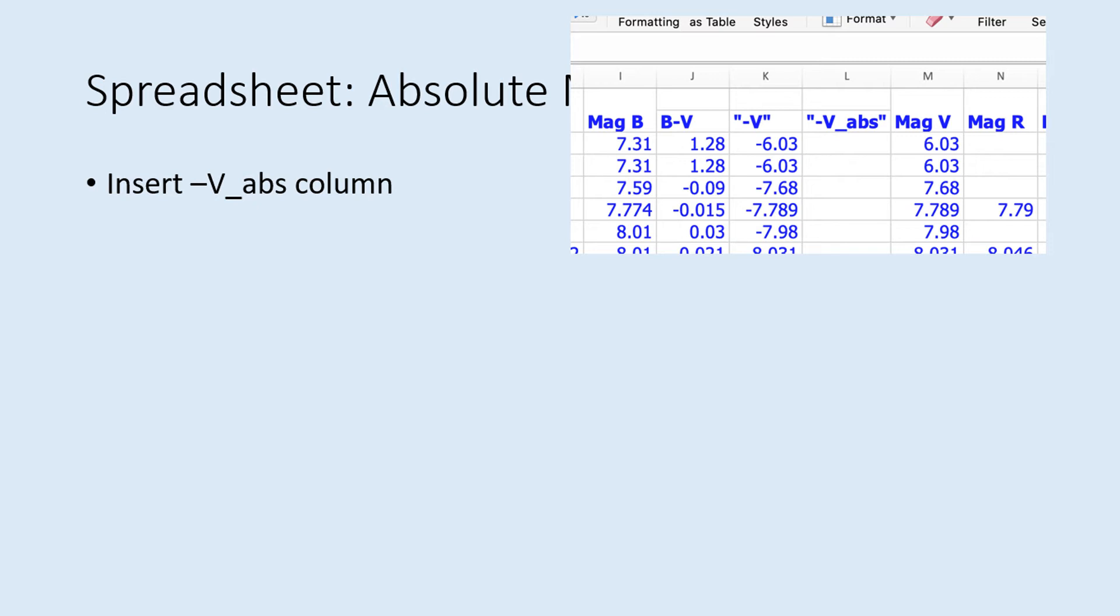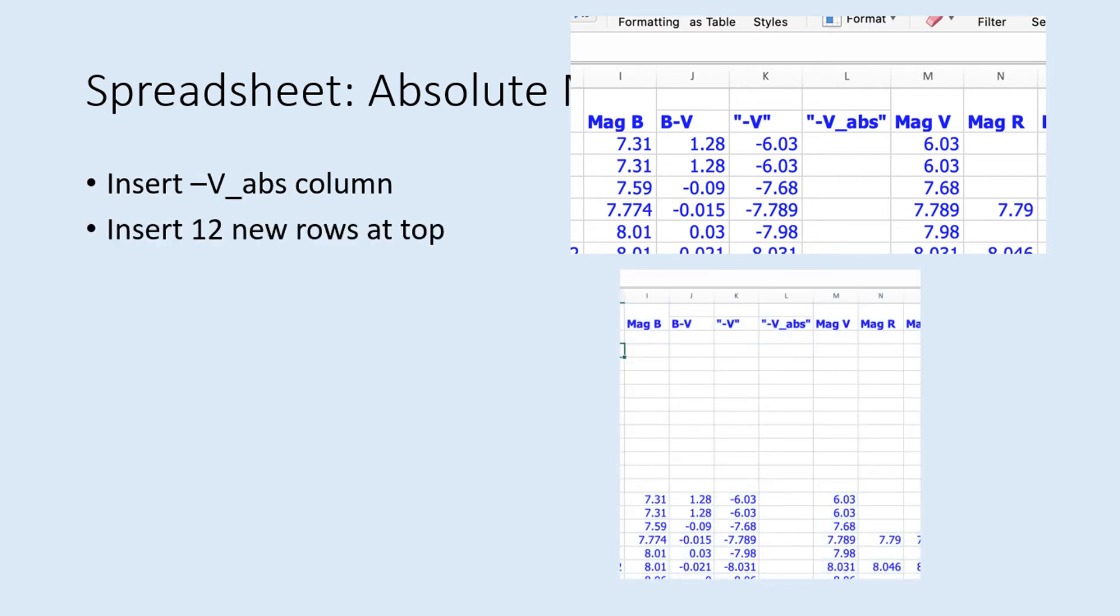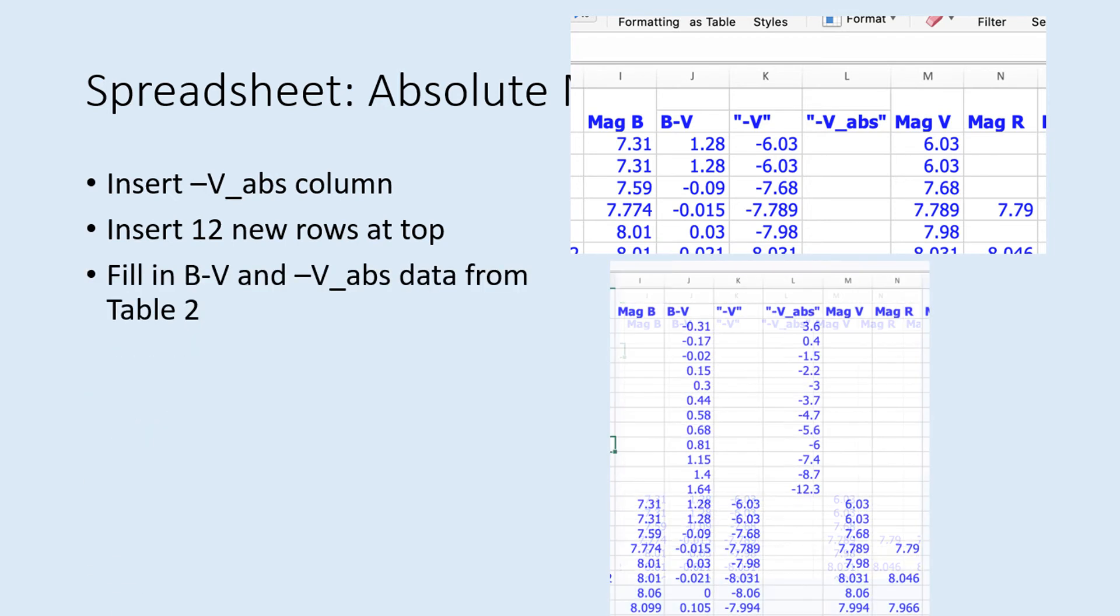Then you should insert 12 new rows at the top of the spreadsheet, just below the column headers. In the B minus V and minus V abs columns in these new rows, fill in the relevant data from table 2. Note that there won't be anything in the minus V column for this data. And the minus V abs column will be blank in all the rows below it.